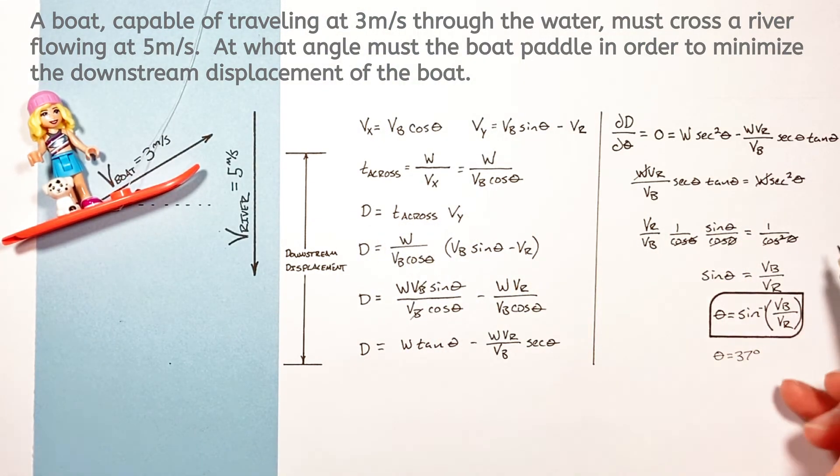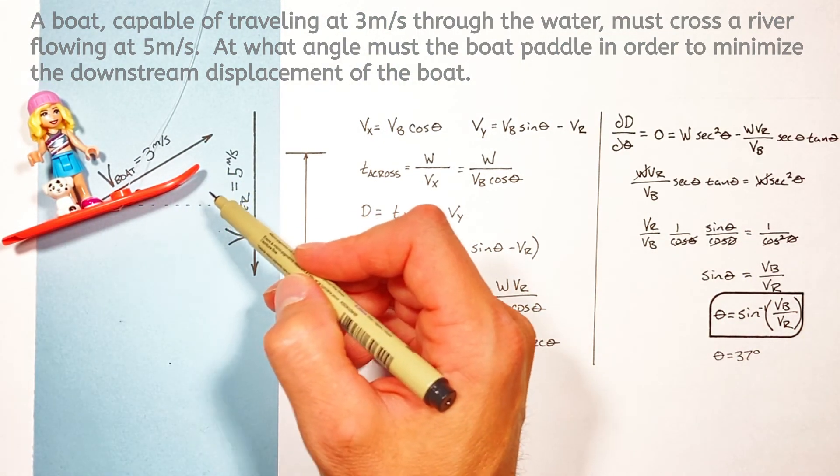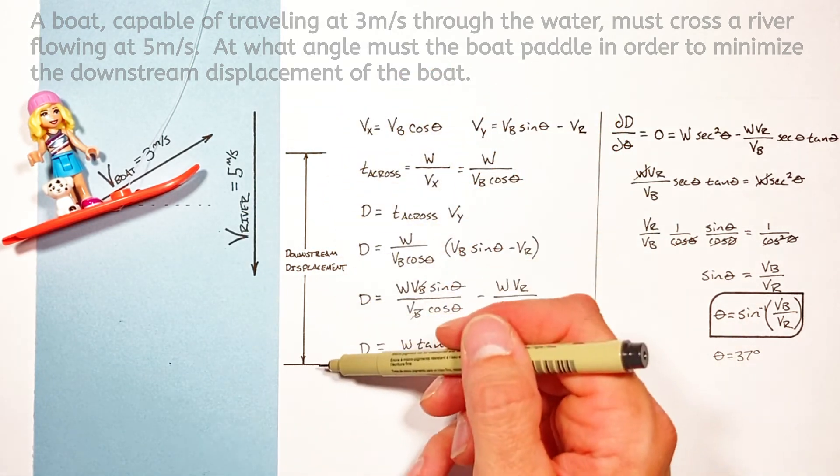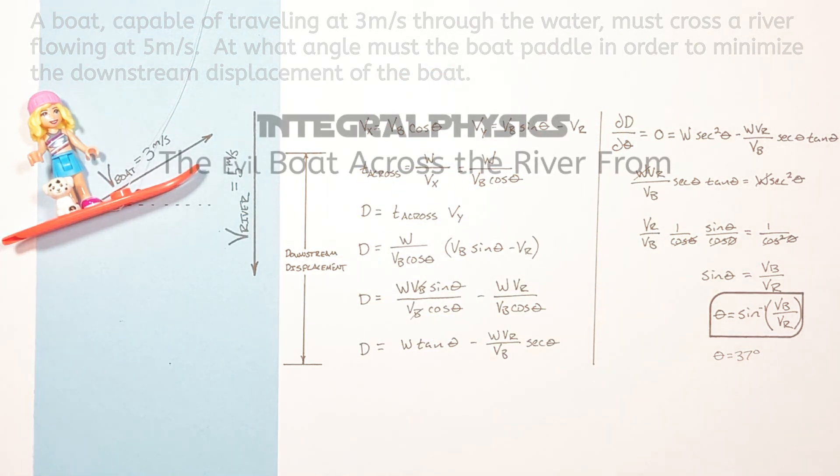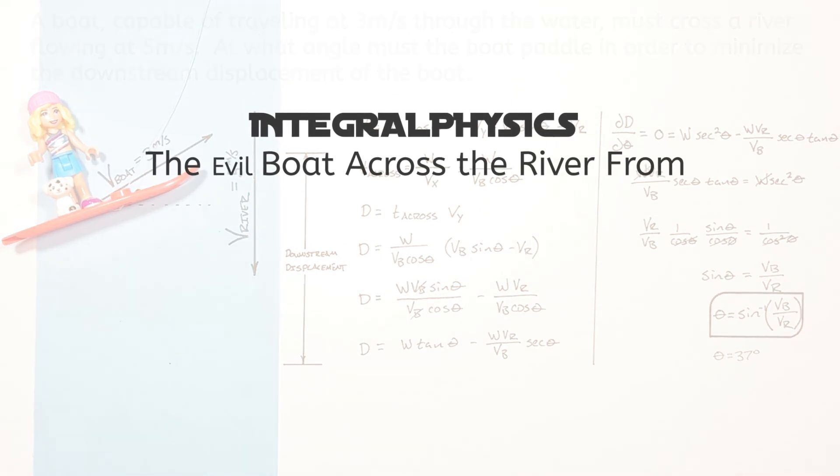So this has been how to solve for the angle which to paddle your pink surfboard across a river in order to minimize the downstream displacement. I hope you found this useful and on that note that's all for now.